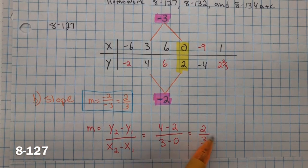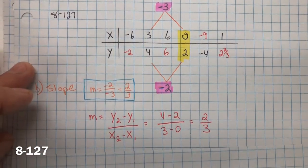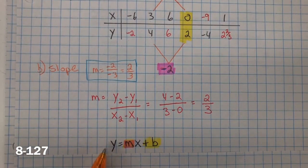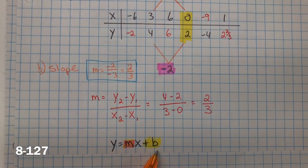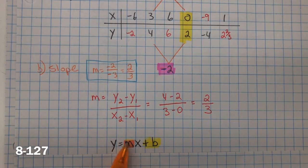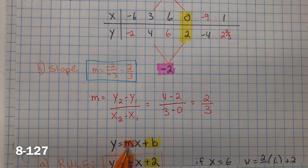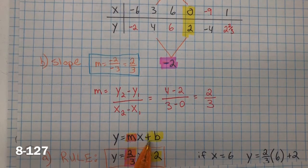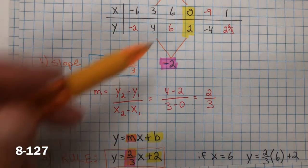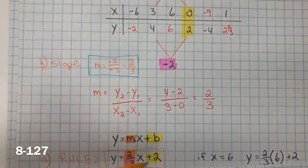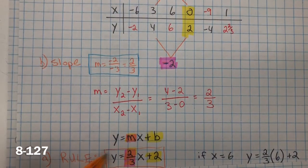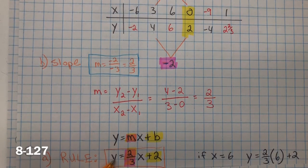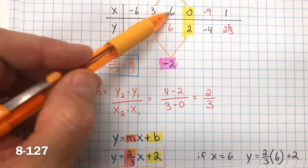So now that I have the slope, I can go ahead and find the rule, which is, or the equation, y equals mx plus b, slope intercept form. Well, we found the slope, the m, which is 2 thirds. And the b is the y-intercept or when x equals 0, so when x equals 0, y is 2. So I found here the rule, or the equation, I can use that rule to find any of these missing values.